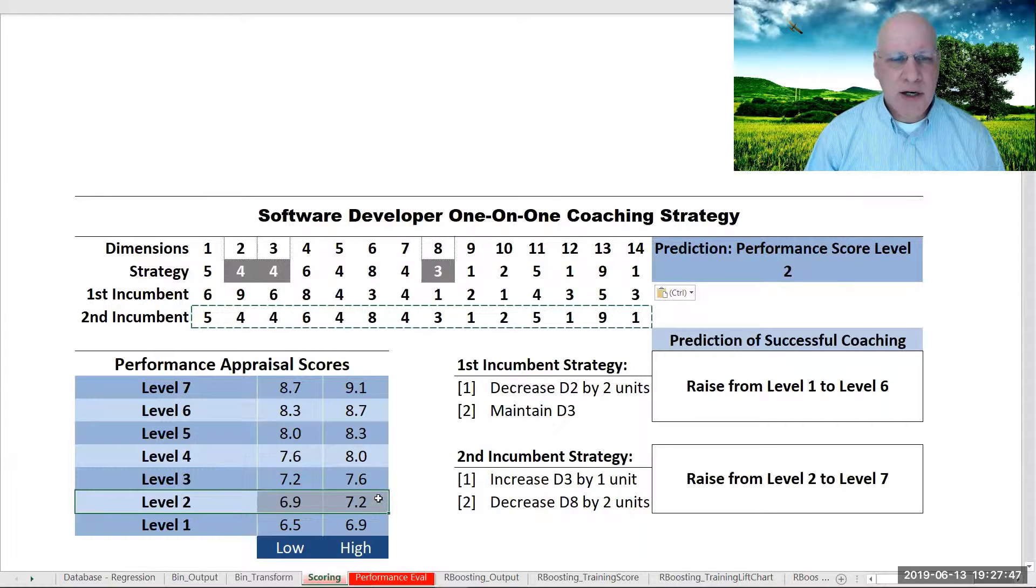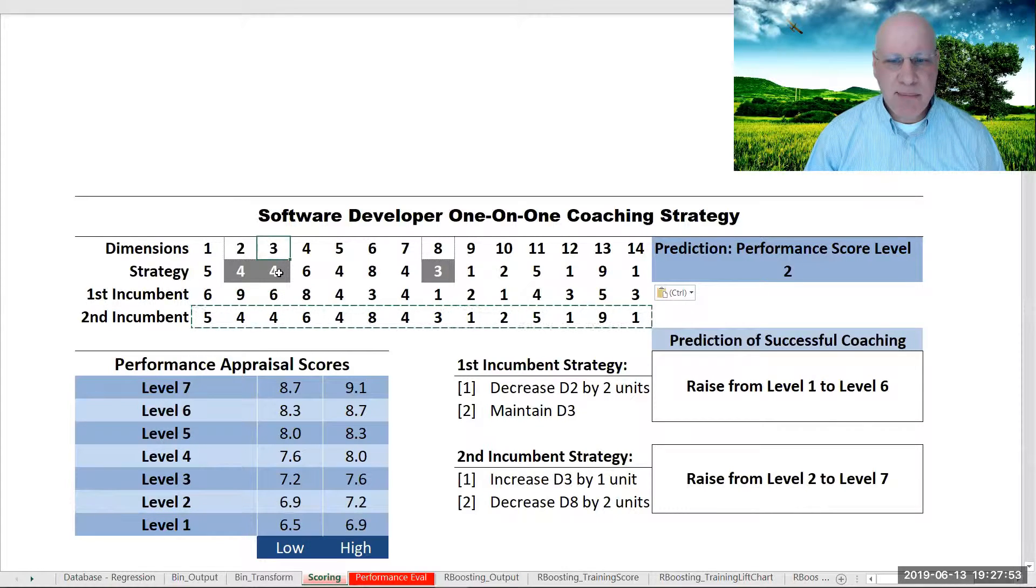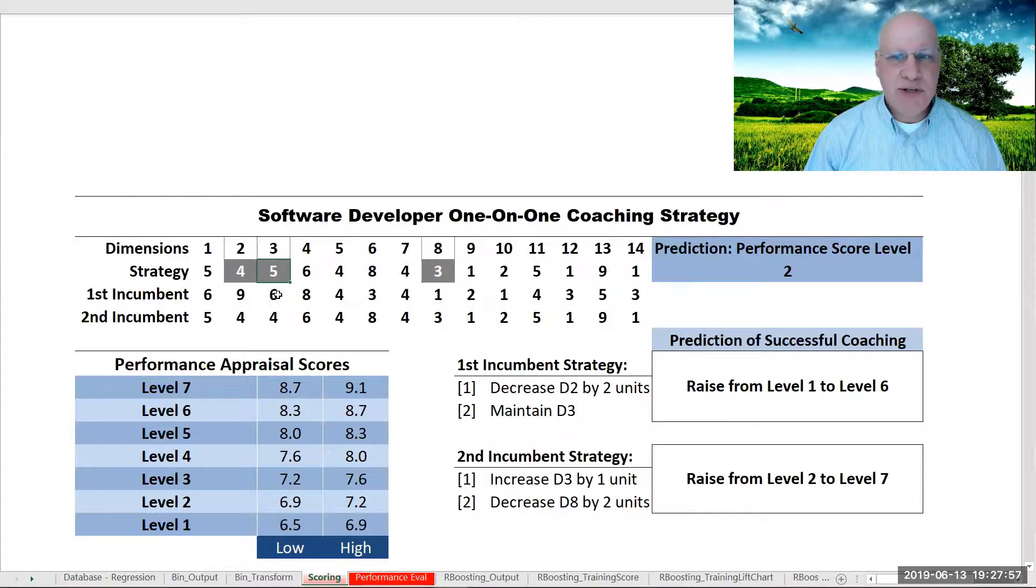Our goal here for a custom coaching strategy would be to increase this third dimension by at least one unit. And when we do that, we see a jump all the way up to level 5. But there's also another scale.